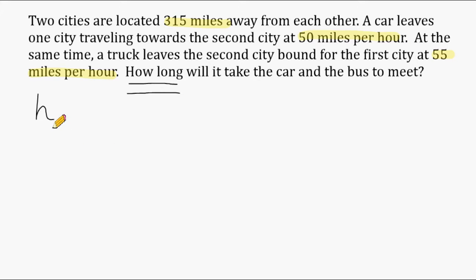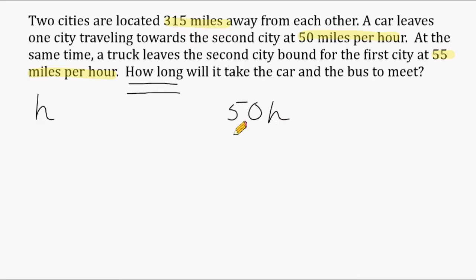After declaring your variable, if you're not sure how to set up the problem, just try to figure out what information you already know — state some facts algebraically. One car is traveling at 50 miles per hour, so multiplying 50 by the number of hours traveled gives us the total distance that car traveled. If h equals 1 hour, the car traveled 50 miles; if 2 hours, that's 100 miles. The same is true for the truck traveling at 55 miles per hour — 1 hour gives 55 miles, 2 hours gives 110 miles.